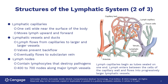Valves prevent the fluid from flowing backwards, just like in the blood system. Lymph nodes hold the lymphocytes that help to fight infection. There are a lot of nodes where there are large lymph vessels.